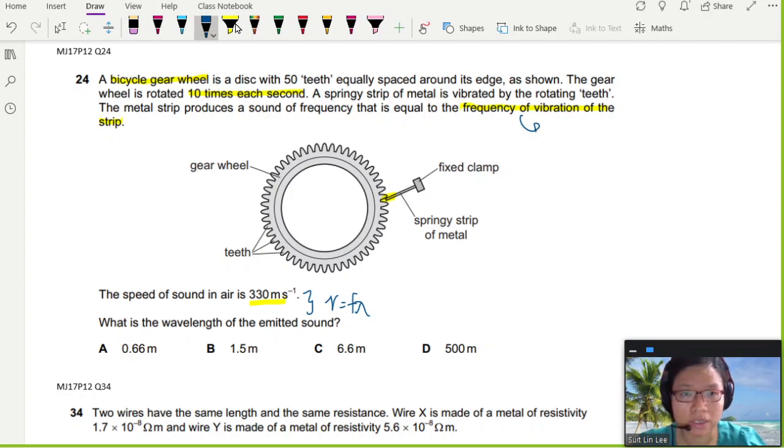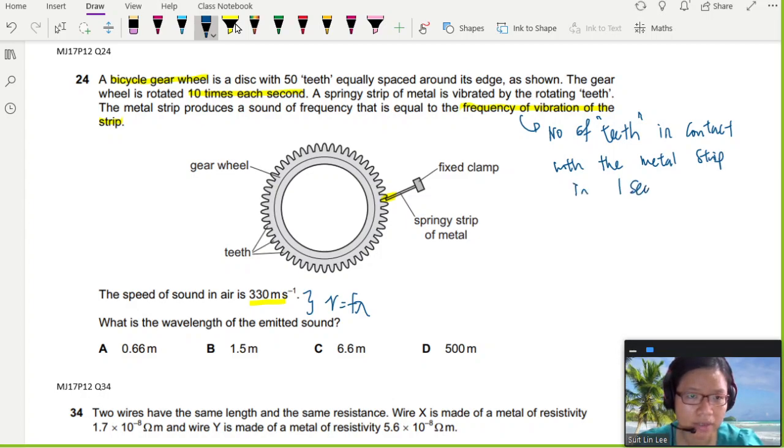So this one would be the number of teeth in contact with the metal strip in one second. So this is your f.